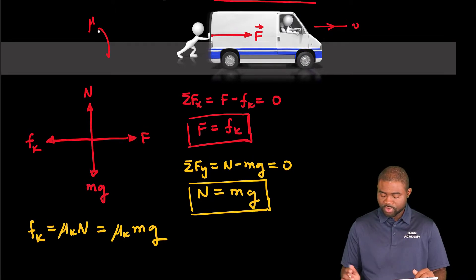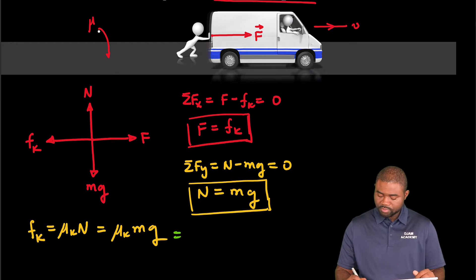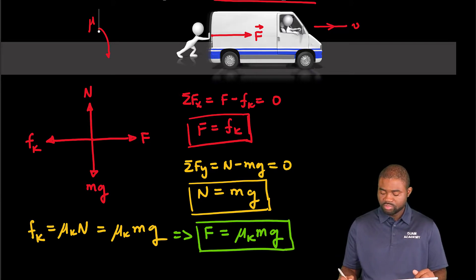So what this all means is that this all implies that the pushing force is going to be equal to μk mg, where μk is the coefficient of friction between the wheels of the car and the road.